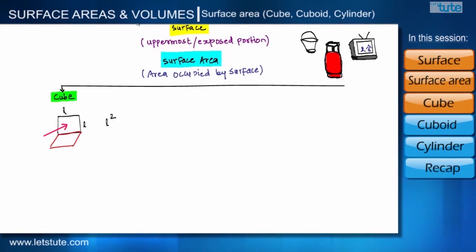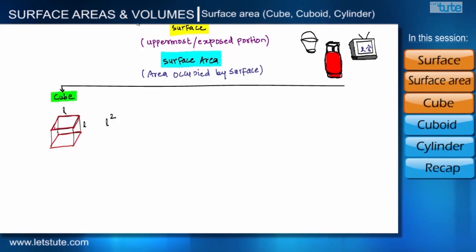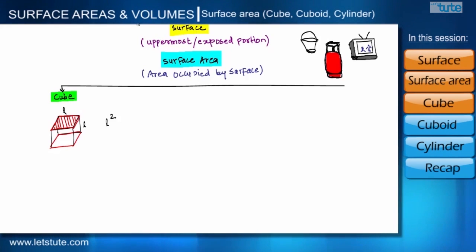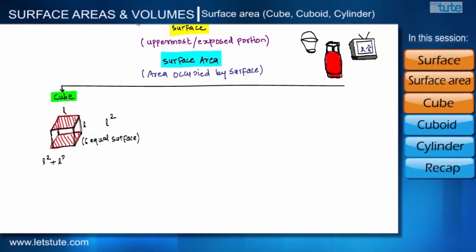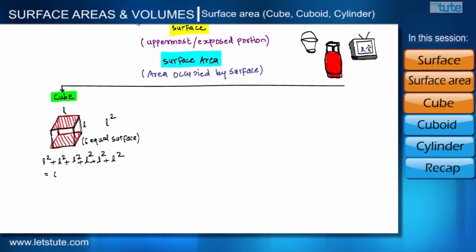We are going to create walls on these four sides. This is the second wall, the third wall, the front is the fourth wall, and the top surface is the last surface of this box. In the shape of a cube, there are total six surfaces, and all the surfaces have the same area L squared — top, bottom, and four walls. So the total area would be L squared added six times.